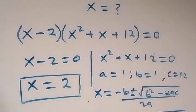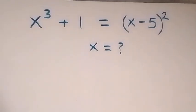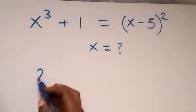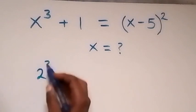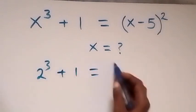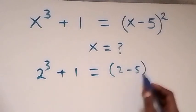Now let's check whether x equals to 2 satisfies the original given problem. When we substitute x equals to 2 into the original equation, this becomes 2 raised to the power 3 plus 1 equals to bracket 2 minus 5 bracket squared.